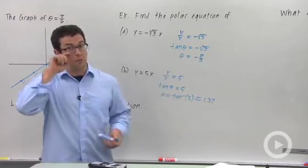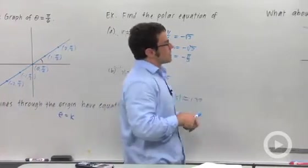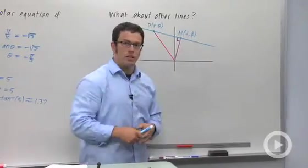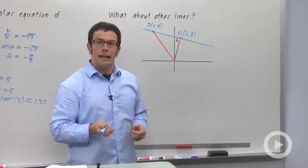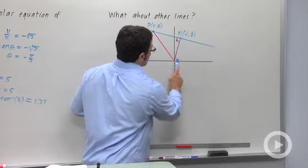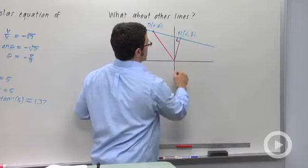Now what about other lines? What about lines that don't pass through the origin? So I've drawn a picture here of a line that doesn't pass through the origin, and I want to find the equation of this line. In order to do that, I need to know the coordinates of the point that's closest to the origin. That's what this point n is.